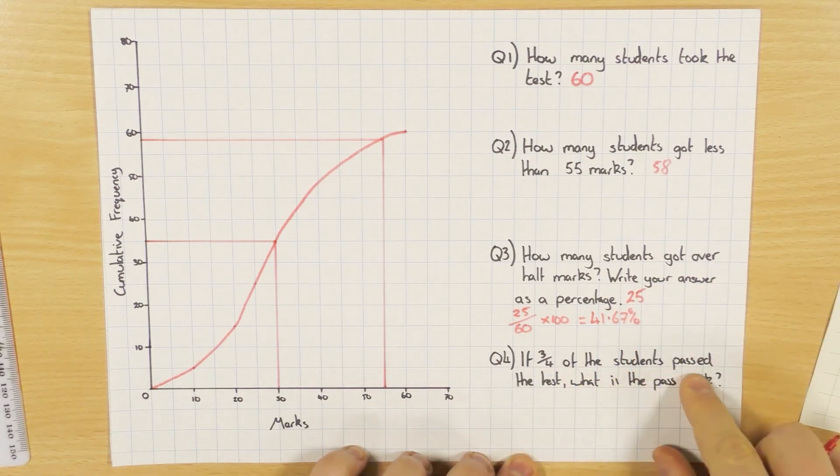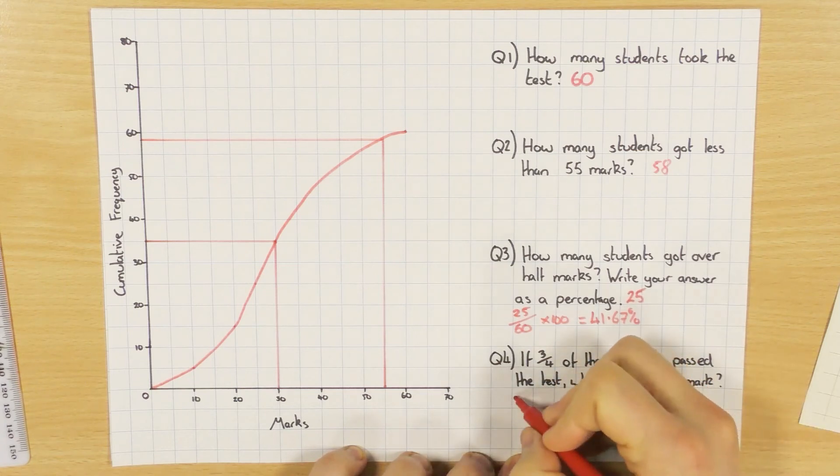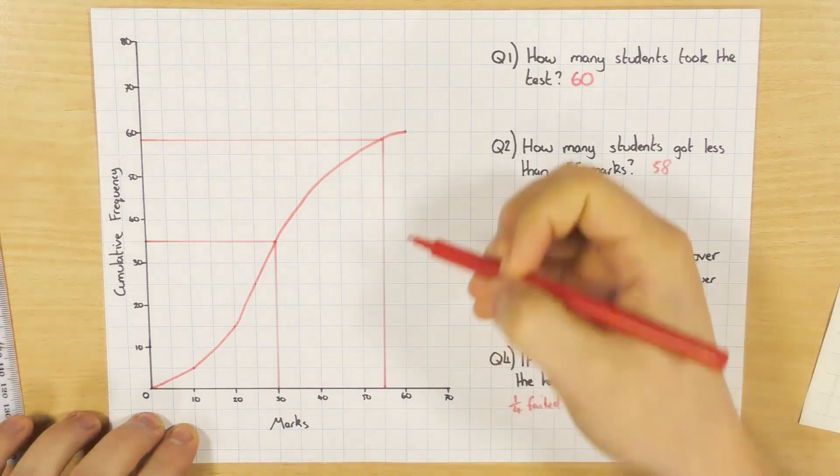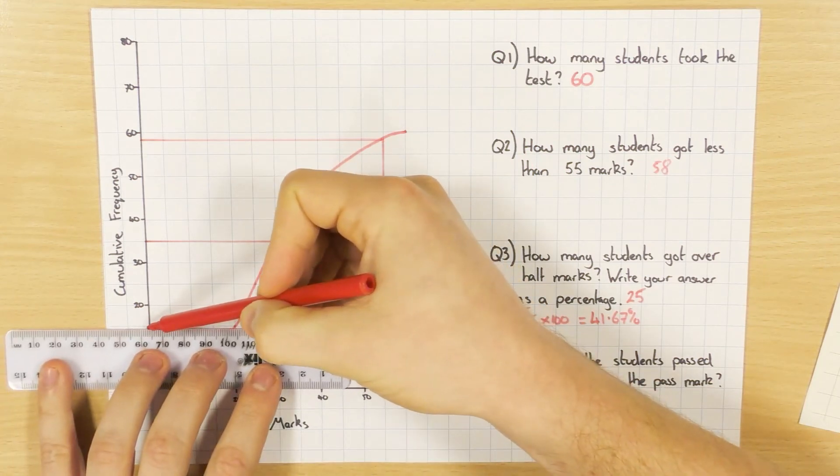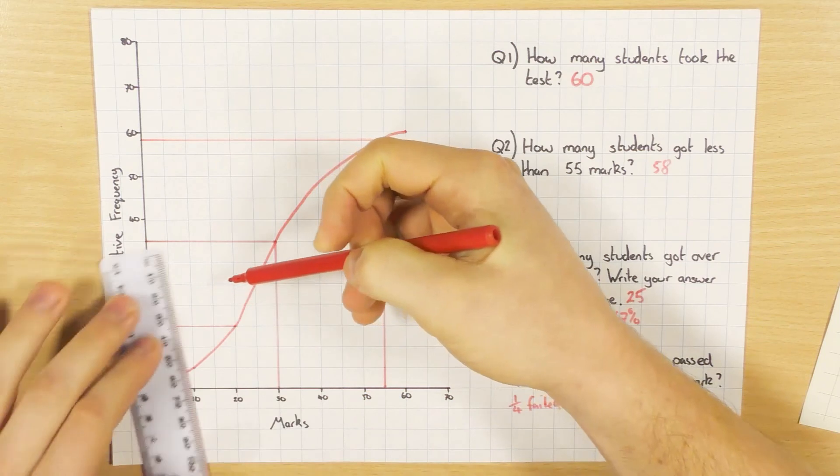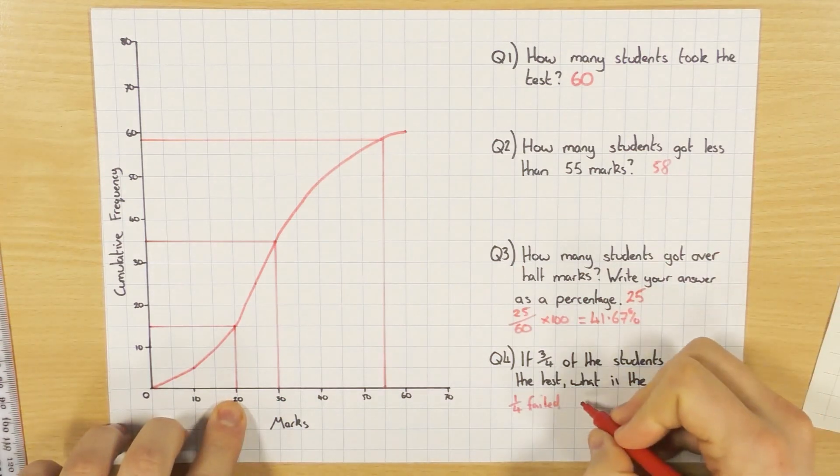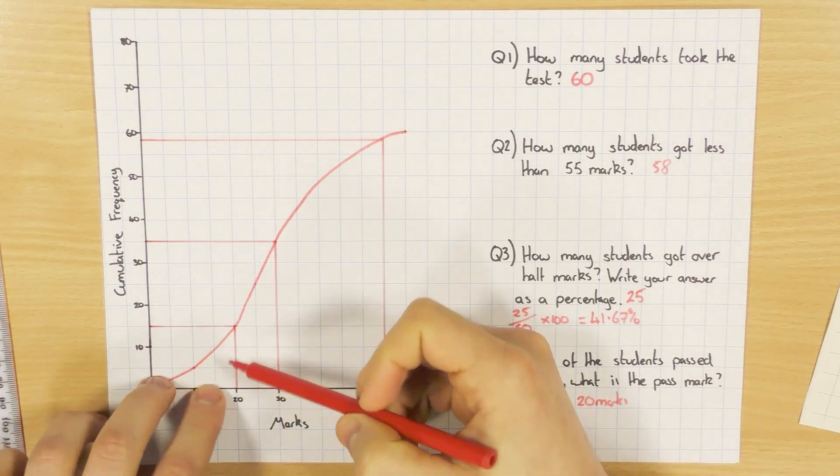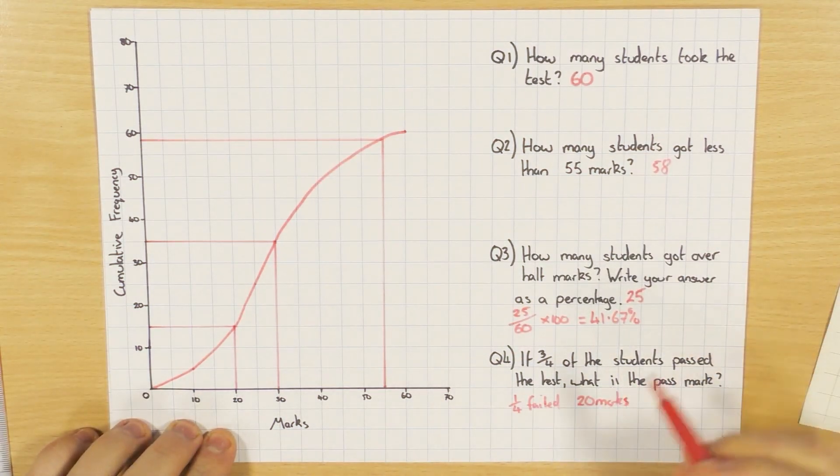And last question here, if three-quarters of the students pass the test, what is the pass mark? So this one here is a bit trickier. If three-quarters passed, that means that one-quarter failed, or did not pass. In which case, if I find a quarter, remember 60 was how many students there were, so a quarter of them are failing, so a quarter would be 15, so I go from 15 across and down. So then I come to 20 marks, so 20 marks would be the pass mark, because a quarter of them failed, so everything below that would be a fail. Everything above that, so three-quarters above that, that would be the pass.